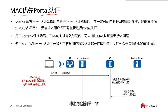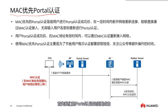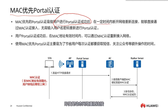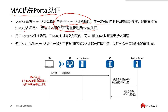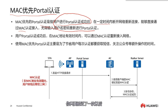This is the MAC-prioritized portal authentication. First, portal authentication must be successful. Then within a certain time, even if there is a dynamic network reconnection, as long as the MAC address is recorded, there is no need to enter the username and password again. This makes it very convenient to use, generally in large public spaces. Once you've authenticated once, even if you restart your phone, you can still continue to access the internet without re-authenticating.